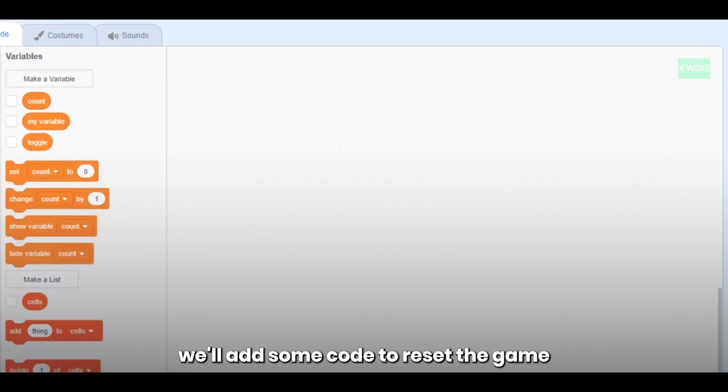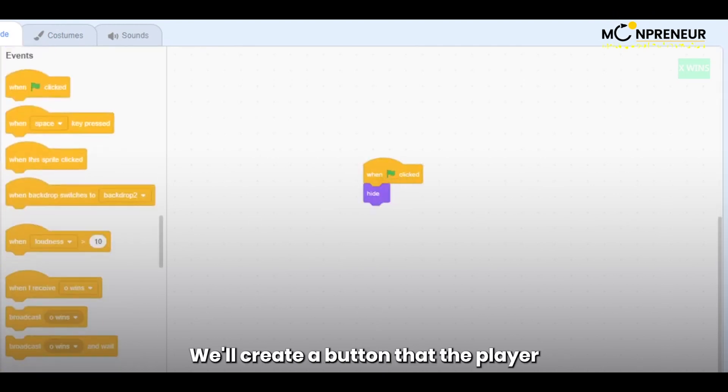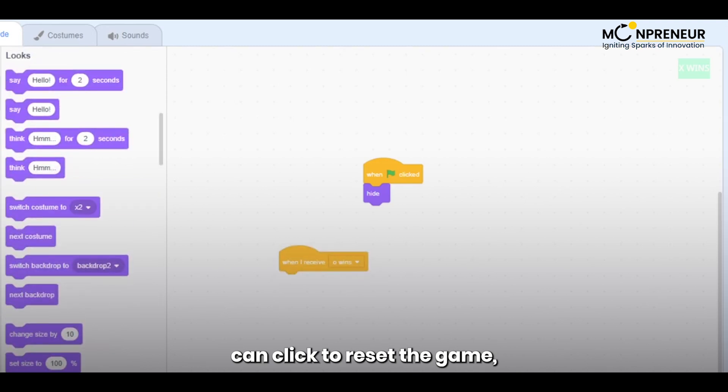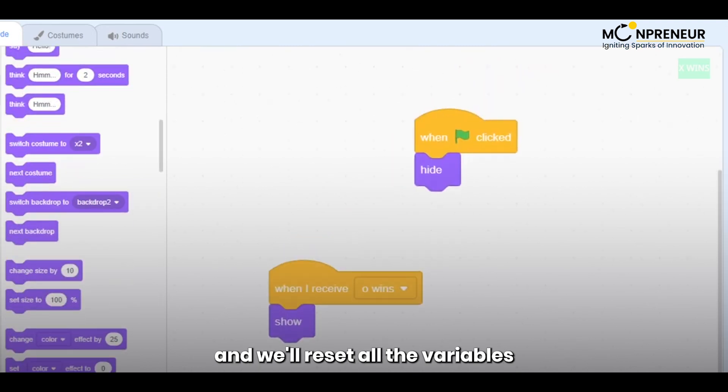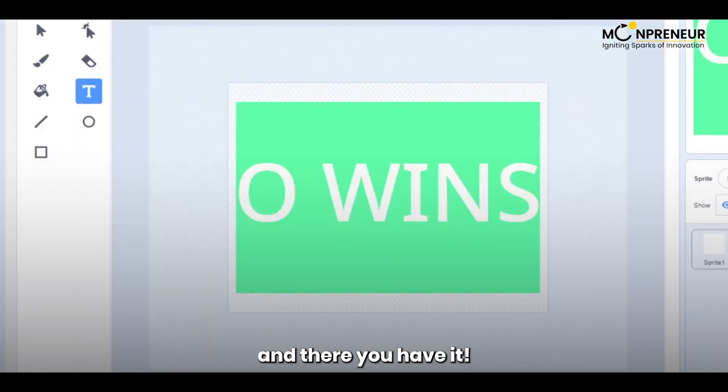Finally, we'll add some code to reset the game when it's over. We'll create a button that the player can click to reset the game, and we'll reset all the variables and sprites to their initial values. And there you have it.